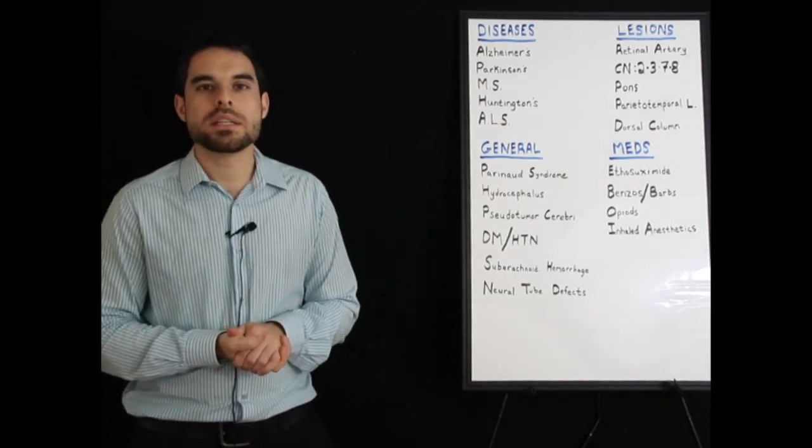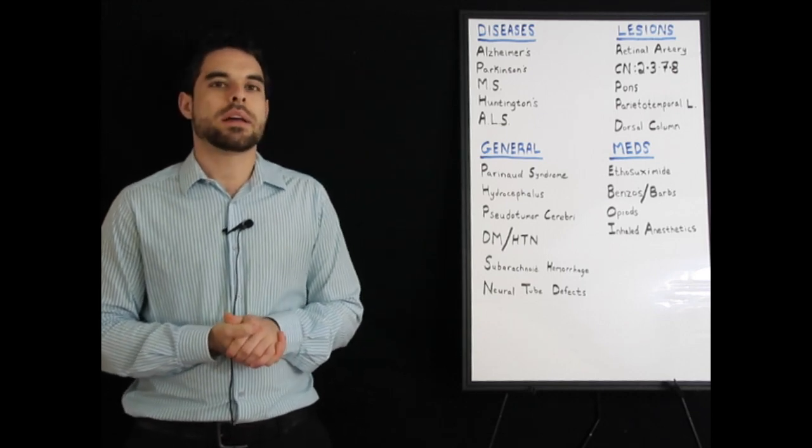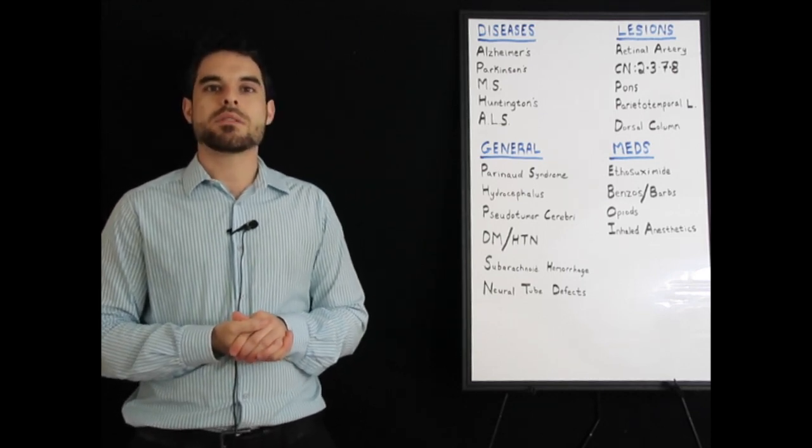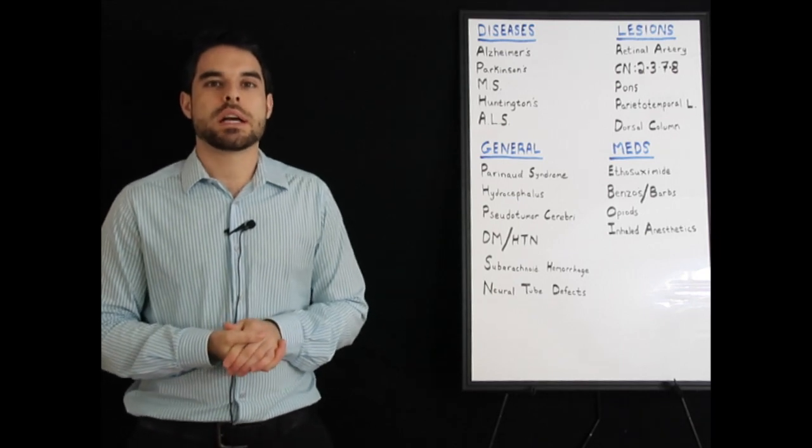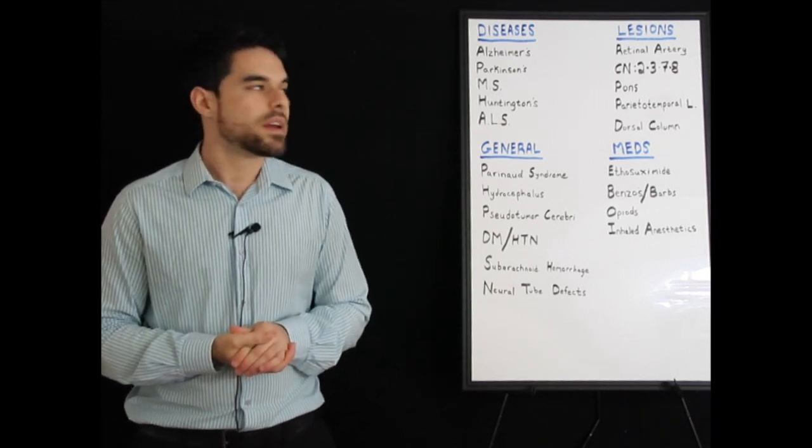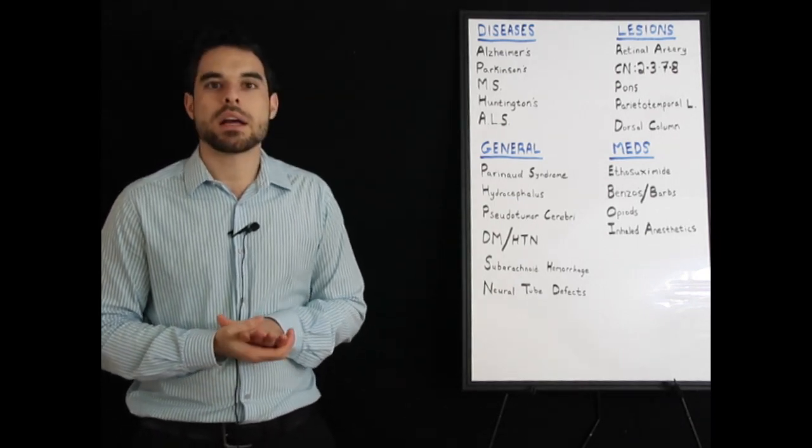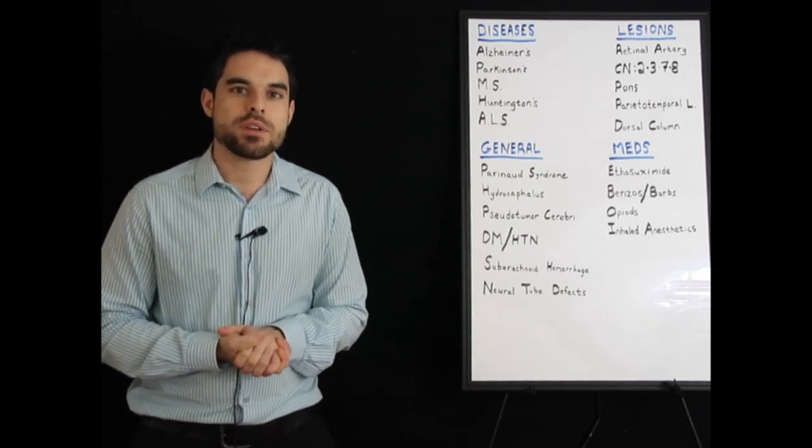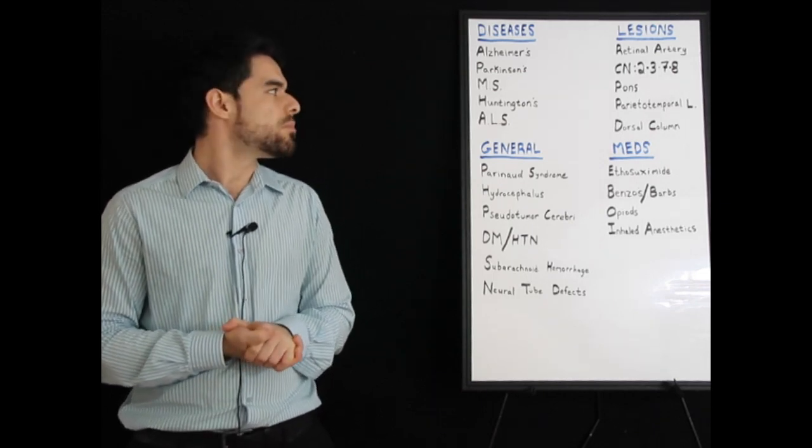Speaking of the pons, a lesion in the pons can cause locked-in syndrome. Two examples would be a basilar artery stroke, or correcting hyponatremia too quickly could cause locked-in syndrome. With locked-in syndrome, you still have function of your blinking. You can still blink.